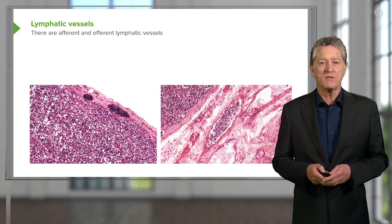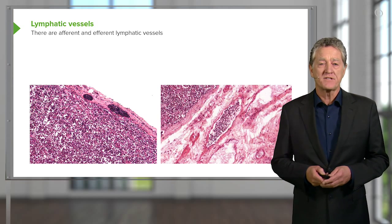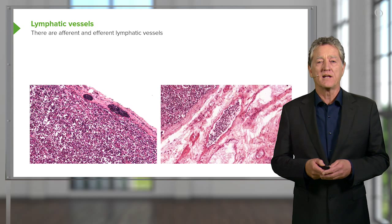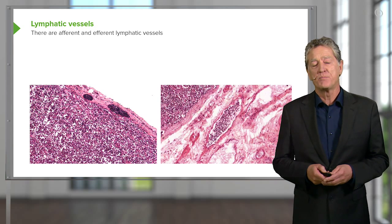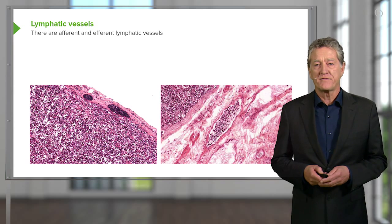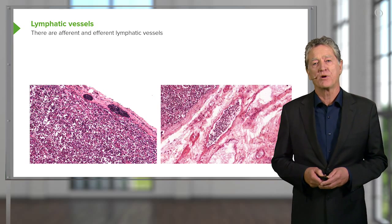If you reflect back on blood, you'll recall that lymphocytes travel through blood and then leave the blood system to survey the body tissues to try and identify any antigens that they're being programmed to identify.